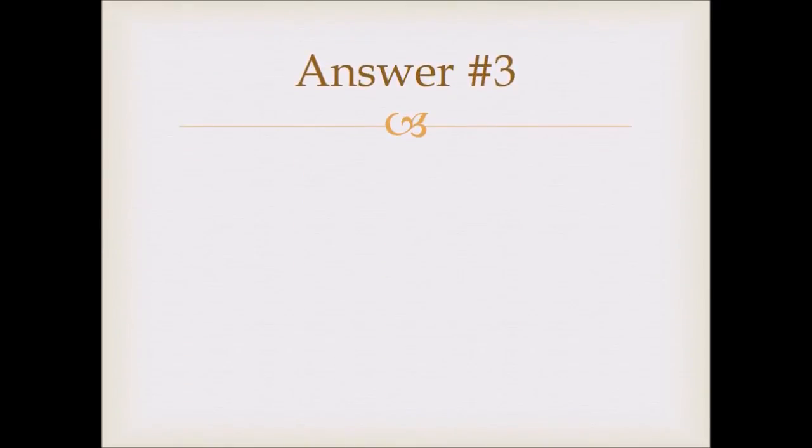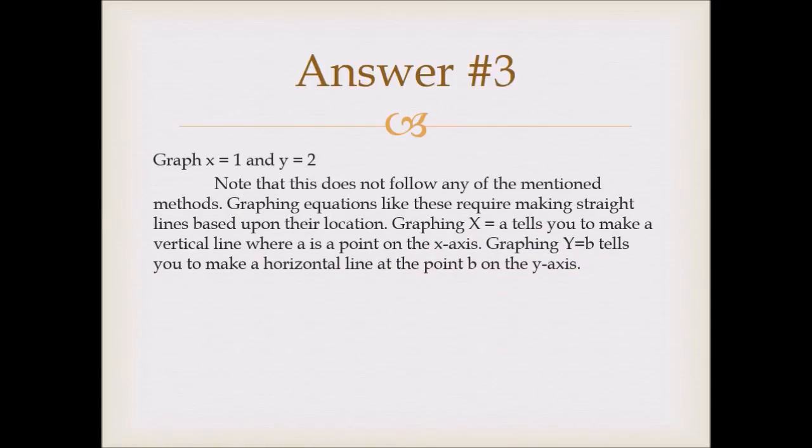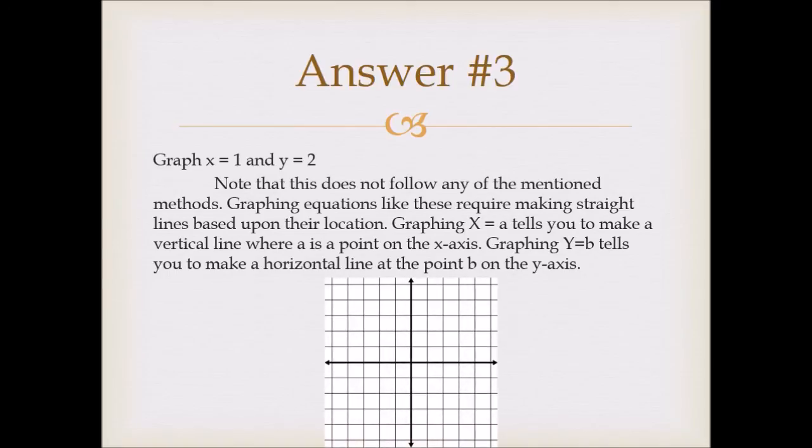Now answer number 3. So this is not like what we've been doing before. These are a little bit different. So the way you do these is you're going to make your point where it says. So if it says x equals 1, then you're going to go one unit on the x-axis and then make a vertical line. And then for your y, you go to that point on the y-axis and make a horizontal line.